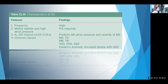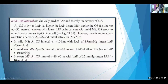The A2-OS interval varies from 0.03 to 0.15 seconds. The A2-OS interval can clinically predict left atrial pressure and therefore the severity of mitral stenosis. This interval is inversely proportional to left atrial pressure — the more severe the mitral stenosis and the higher the left atrial pressure, the earlier the opening snap and the shorter the A2-OS interval. In mild MS, the A2-OS interval is more than 120 milliseconds.